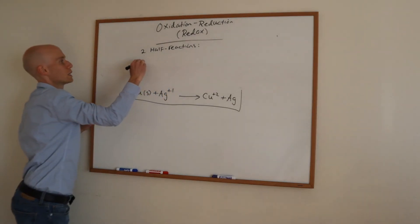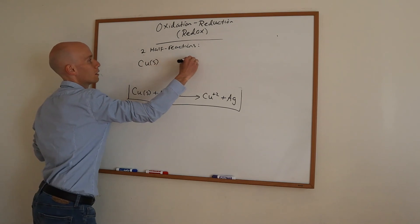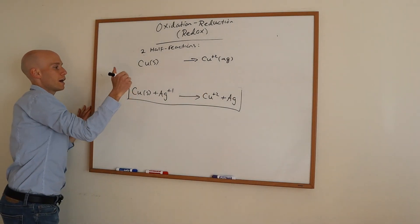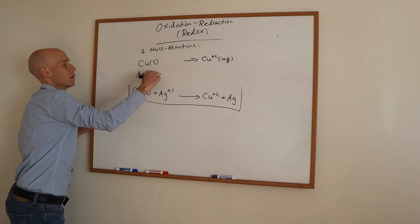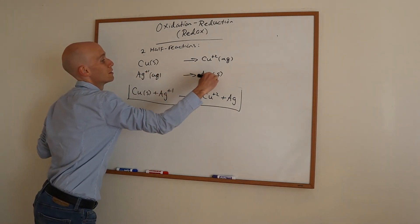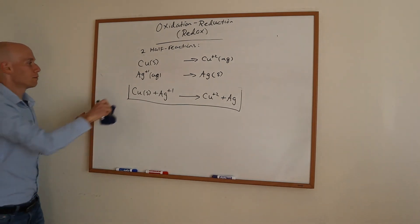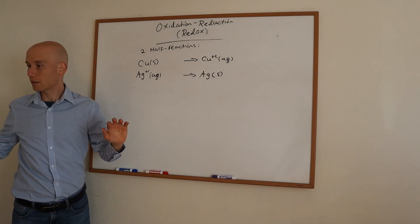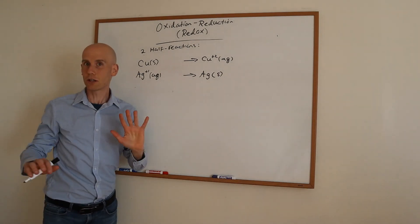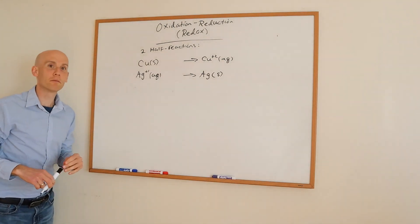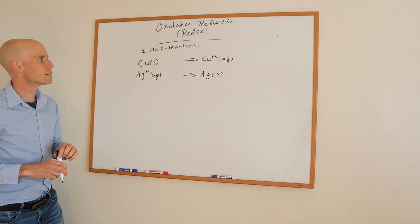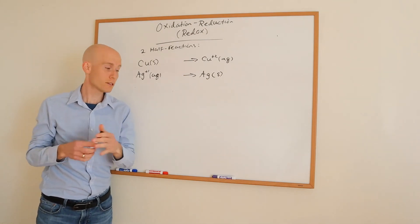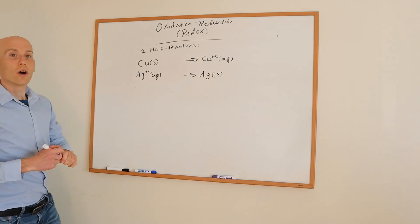So the two half reactions are: copper solid goes to Cu²⁺ (aqueous), and Ag⁺ (aqueous) goes to elemental silver. I'd also like you to tell me — which one is the oxidation half reaction and which one is the reduction half reaction? Take a moment to figure that out.